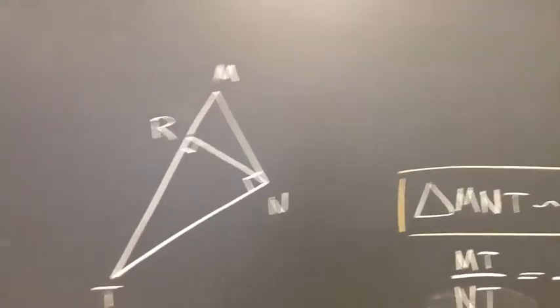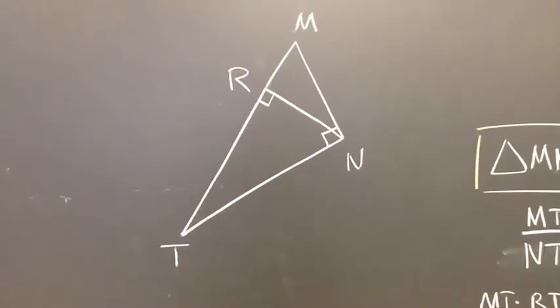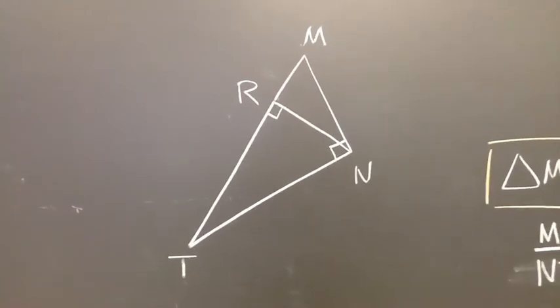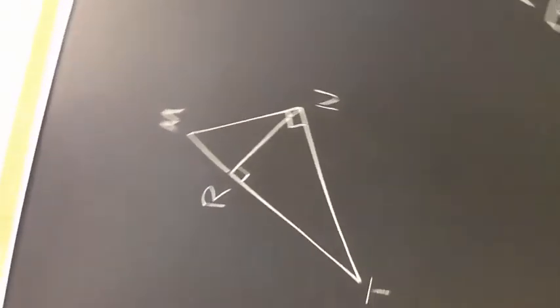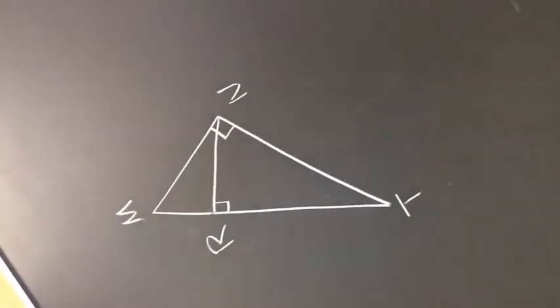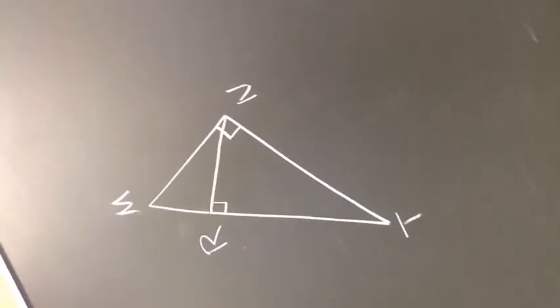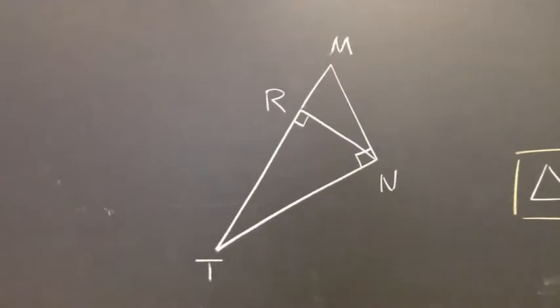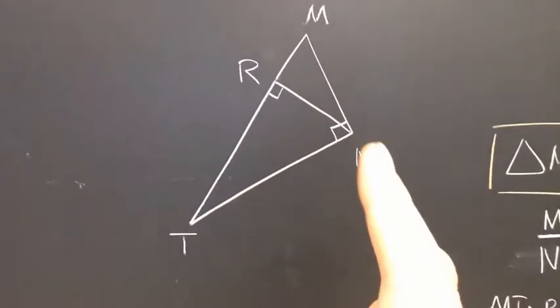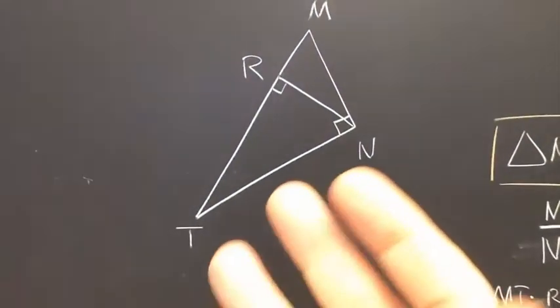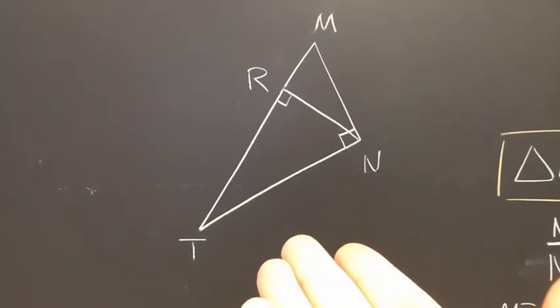Now focus your attention not on the largest triangle, not on the smallest triangle, but on the medium-sized triangle, which would be this one right here. So what is the shortest leg? Well, it's either R-N or N-R.